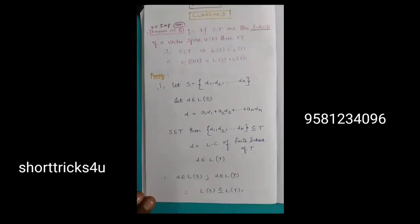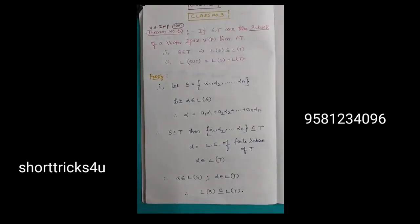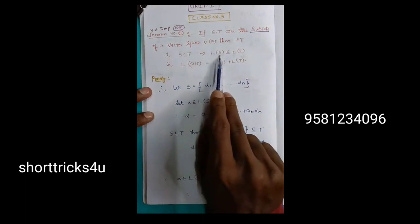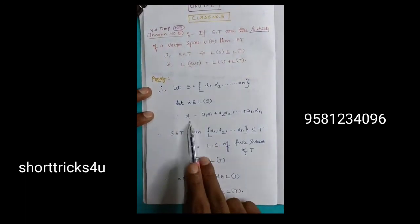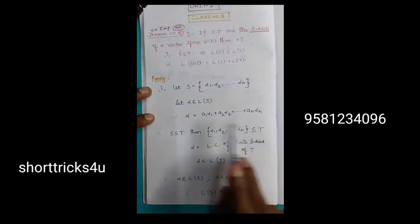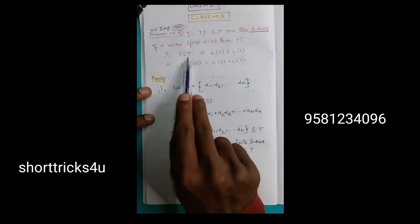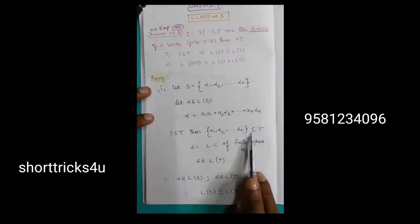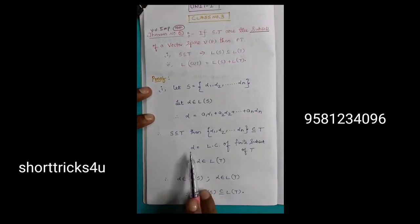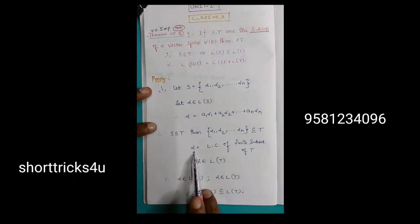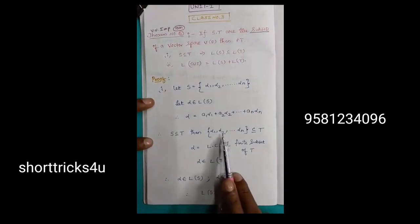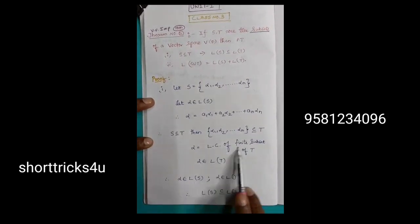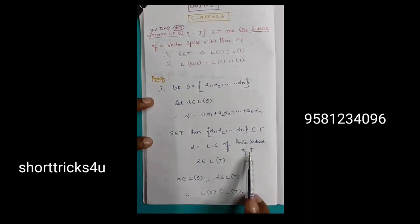First part is very important, very simple. S and S, L of S, linear combination. S contains T, so Alpha1, Alpha2, and so on. Alpha is equal — the linear combination of a finite subset of T.